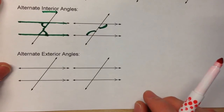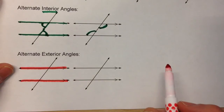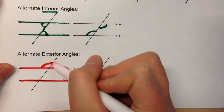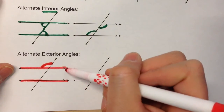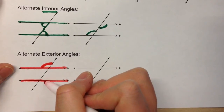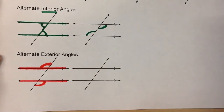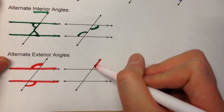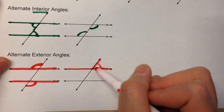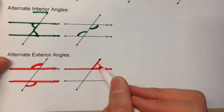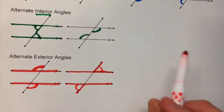Alternate exterior angles are very similar, but they need to be on the outside of the parallel lines. So for example, this angle right here is on the left side of your transversal on the outside of the parallel lines, so its alternate exterior angle is right here — the right side of the transversal on the outside of the parallel lines. And this angle right here, outside of the parallel lines on the right side of the transversal, has its alternate exterior angle on the outside of the parallel lines on the left side of the transversal.